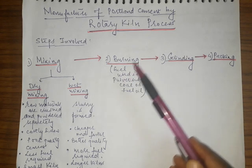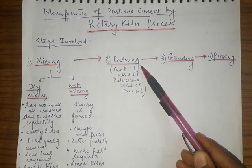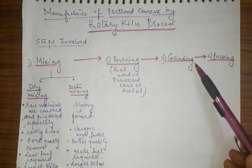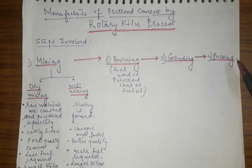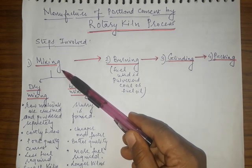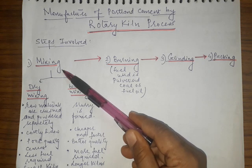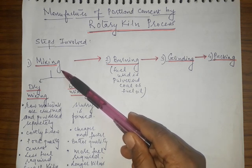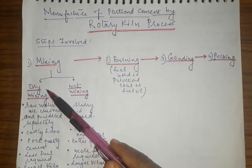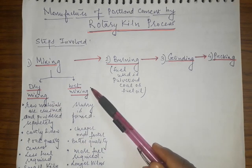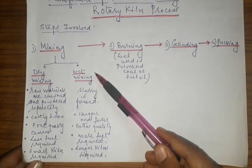After burning in the rotary kiln, the products are subjected to grinding, and the powdered product is ready for packing as Portland cement. In the first step — mixing — the calcareous, argillaceous, and ferriferous materials are mixed together by two processes: dry mixing and wet mixing.